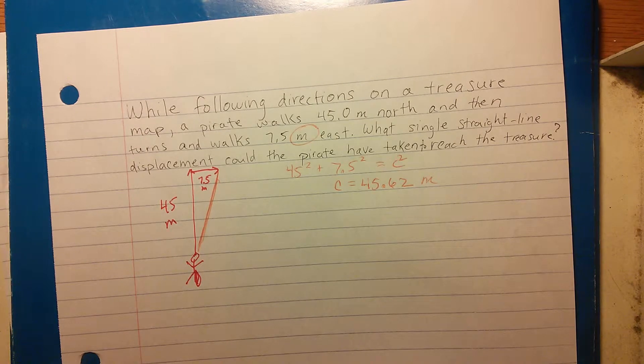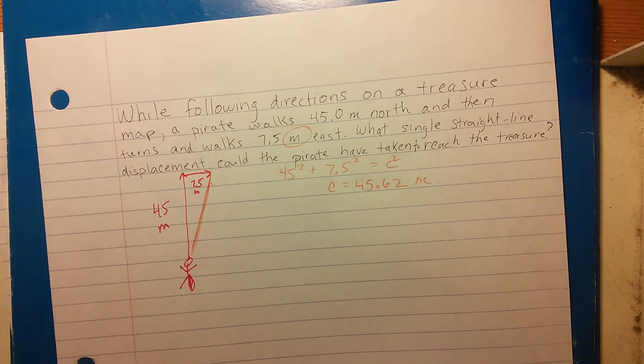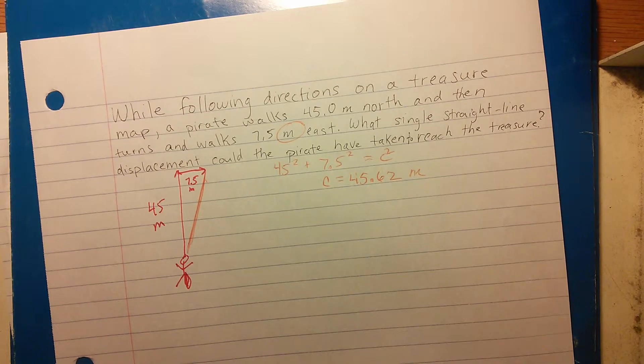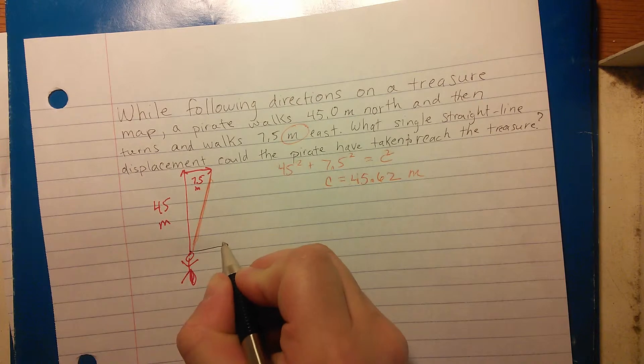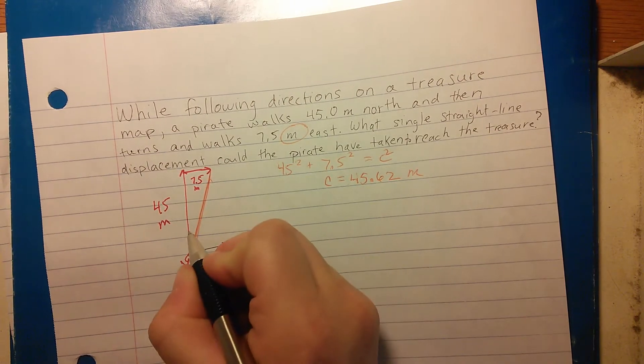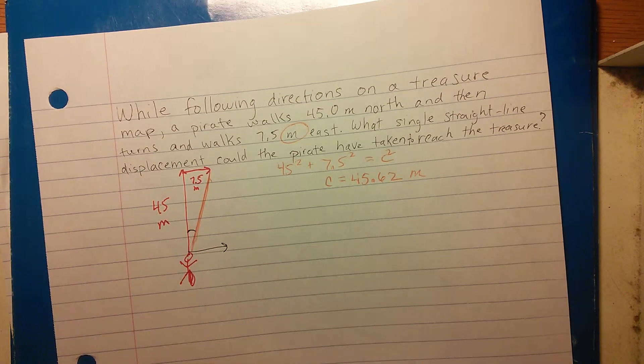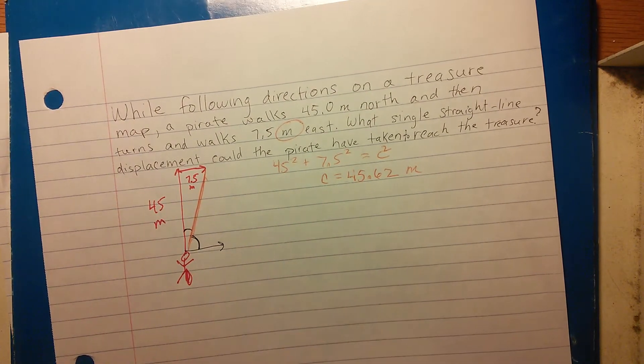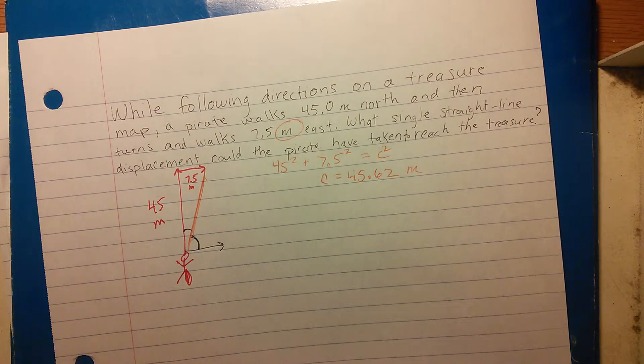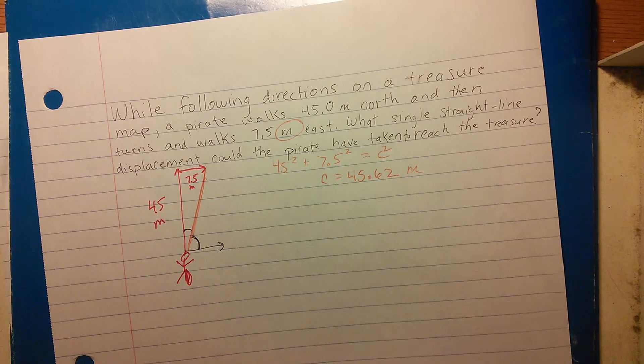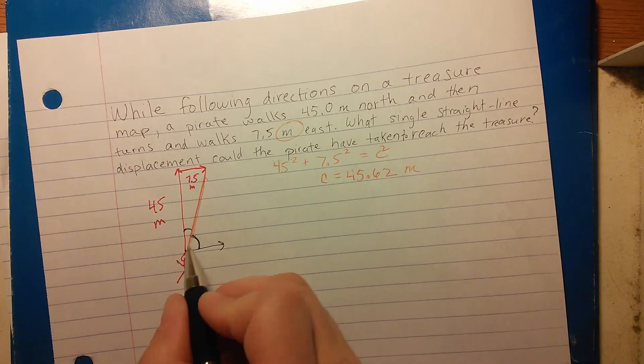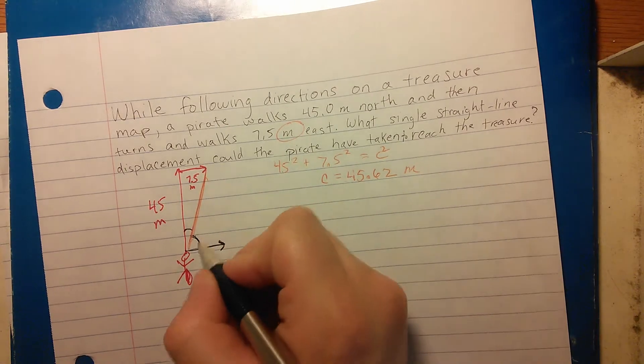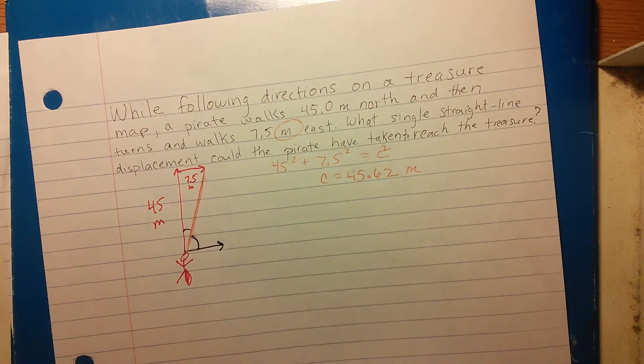Now the trickier part is finding the angle. We actually have two choices to find that angle here. You could find this angle here or you could find the complementary angle here. Now I always find it's better to find the angle that goes right above the horizontal. So in this case, this line here is the horizontal, so you want to find this angle.